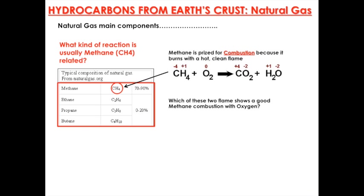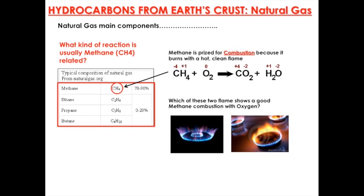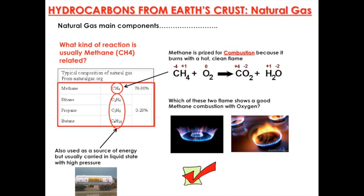Now, which of these two flames shows a good methane combustion with oxygen? The one on the left — the blue one — is the correct one. The one on the right-hand side is the incorrect one. Ethane, propane, and butane are also used as a source of energy, but usually are carried in a liquid state using high pressure.